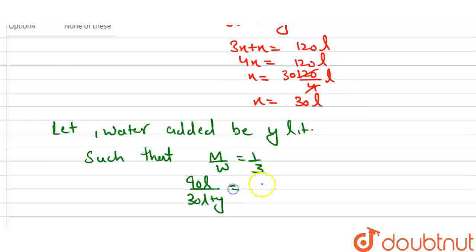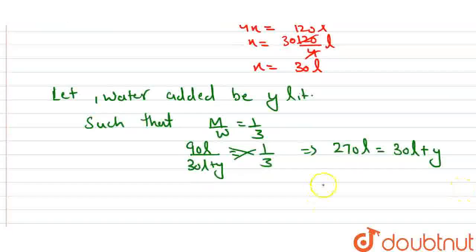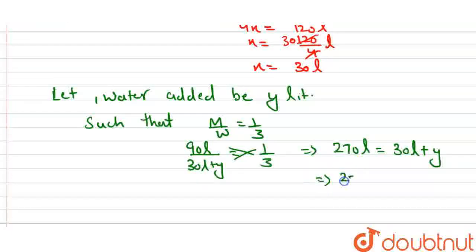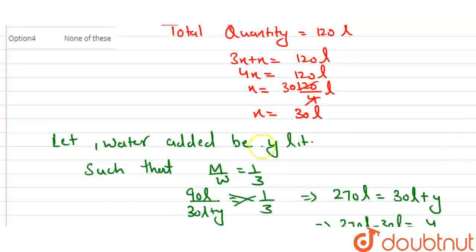So 90 divided by 30 plus y equals 1 divided by 3. Cross multiplying, 90 times 3 equals 30 plus y. 270 equals 30 plus y, so y equals 240 liters.